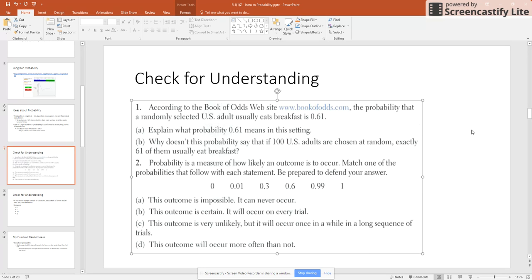So if I take a large sample of U.S. adults, the probability that they usually eat breakfast is 61% that they will say, yes, I eat breakfast.